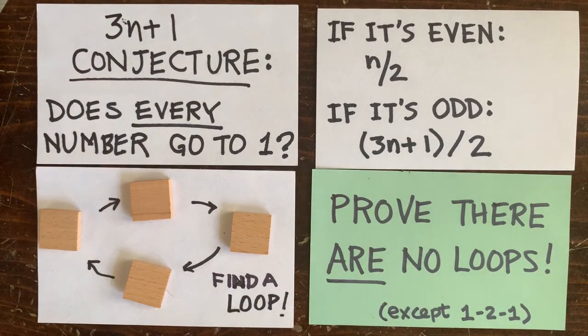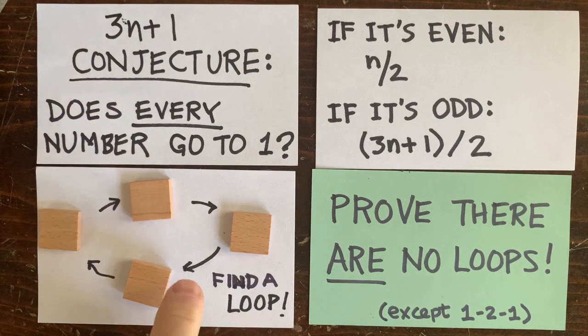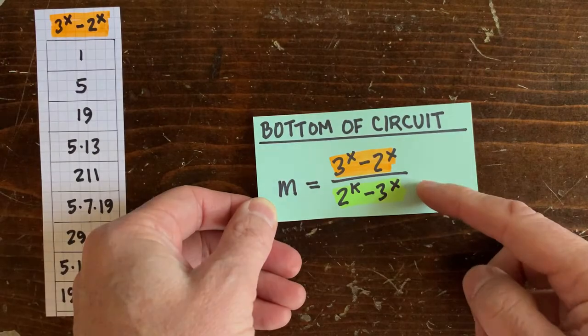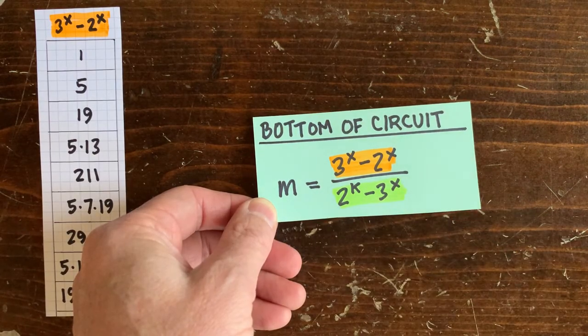Hey, welcome back. We're trying to prove that there are no circuit loops, which means we want to prove that no matter how many up and down moves you pick, this is never going to be an integer.